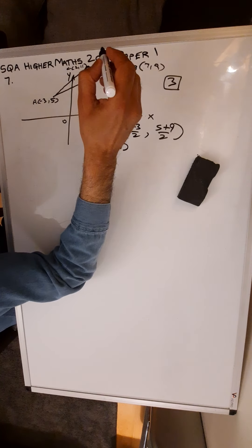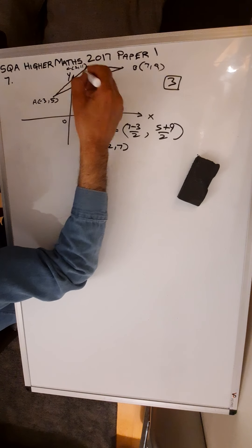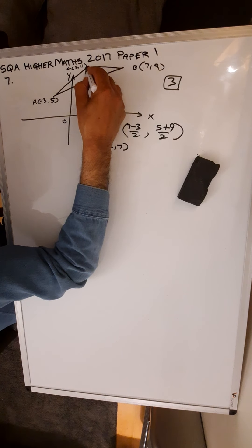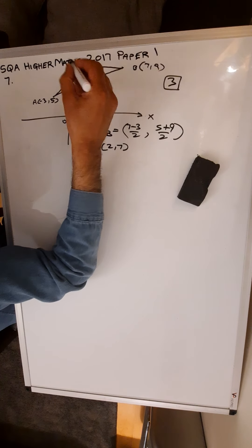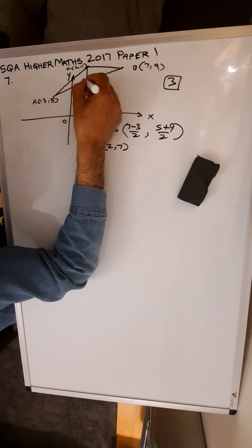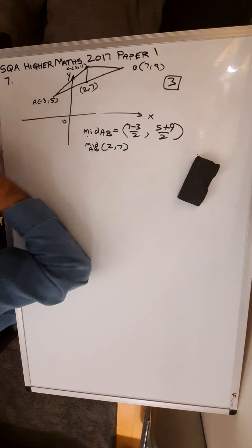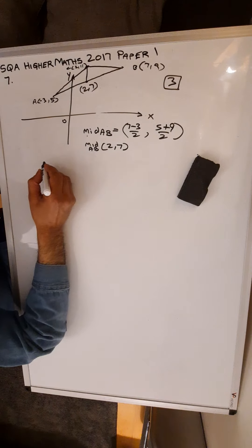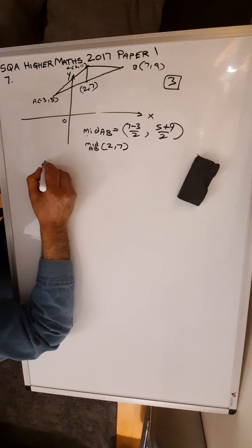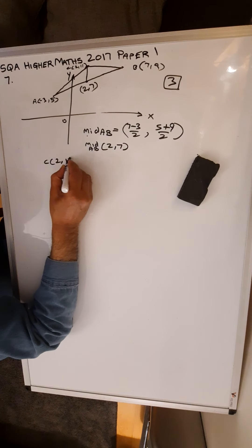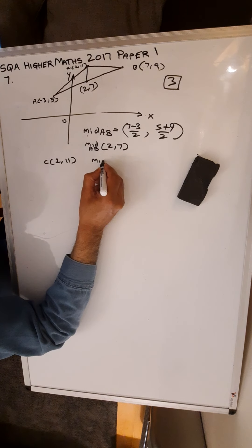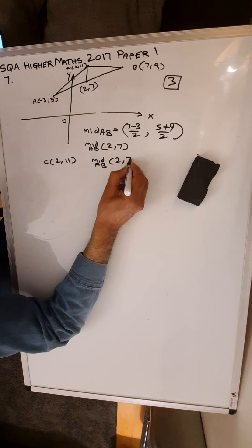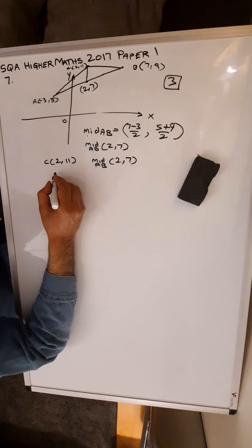And that is the point (2, 7). So where is the midpoint? You can see that the two points you have got are C is the point (2, 11) and the midpoint of AB is (2, 7). Need to find the gradient of this line.